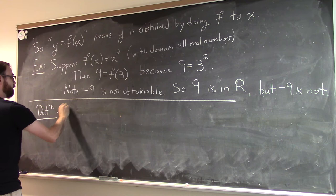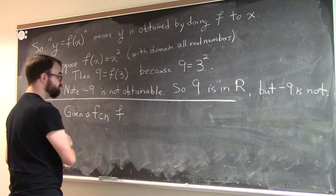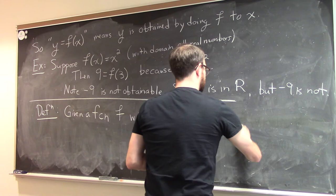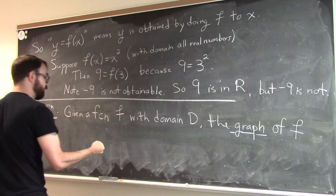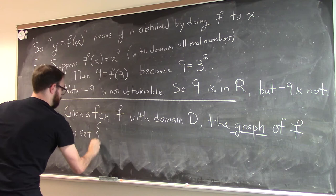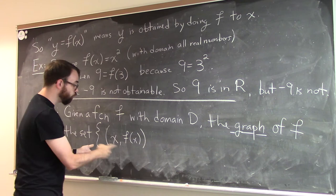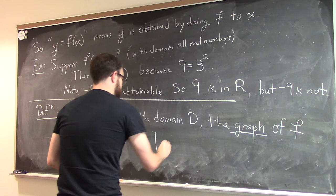So what do I mean by the graph? So given a function, and here is how I will typically abbreviate the word function, so given a function, say, f with domain d, the graph of f, well, it's just a collection of ordered pairs. It's a collection of ordered pairs in the plane. So I'm going to describe, using set notation, the graph. So it looks like it's this. It's the set of all ordered pairs where the first coordinate is some input value x, the y coordinate is just the corresponding output value, right, f of x.